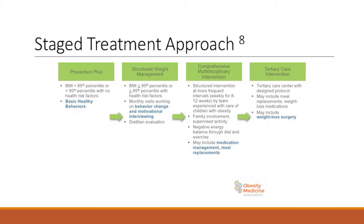In terms of the staged treatment approach — mostly in pediatrics but similar in adults — Prevention Plus involves basic healthy behaviors for patients between the 85th and 95th percentile. The next stage uses monthly visits with behavior changes and motivational interviewing once they're closer to the 95th percentile. The next stage includes medications, management, and meal replacements. Finally, if there are many comorbidities, weight loss surgery is considered.